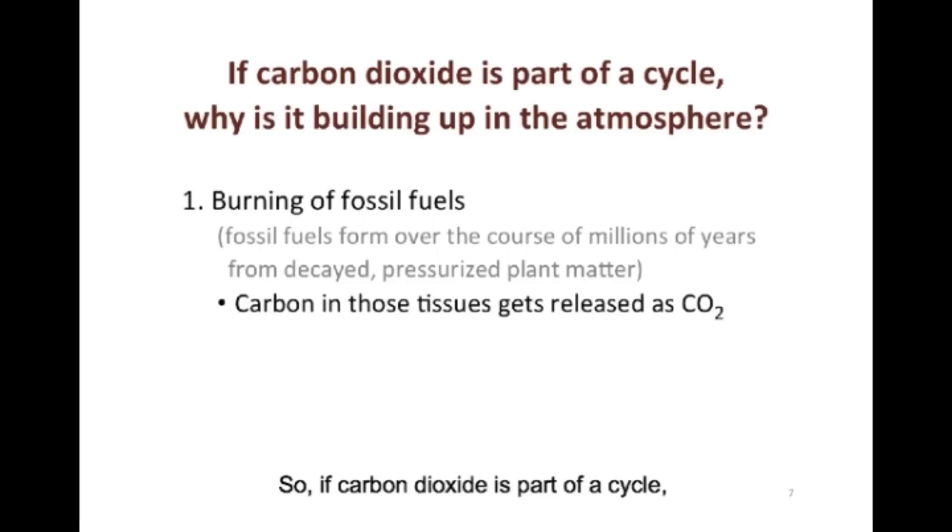So if carbon dioxide is part of a cycle, then why is it building up in the atmosphere? The first reason is that humans are burning fossil fuels. Fossil fuels take millions of years to form from plant matter. However, when we burn these fuels, for example, driving a car, the carbon stored in these fuels is released as CO2.